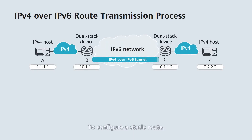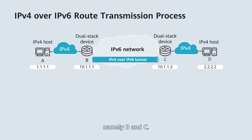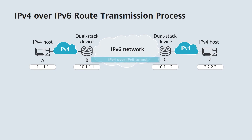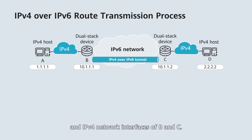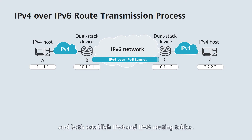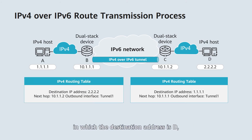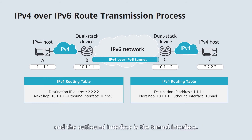To ensure packet forwarding, you can use static routes or dynamic routing protocols such as IGP and BGP to advertise routing information. To configure a static route, you need to specify a destination address and a next hop on both ends of the tunnel, namely B and C. The destination address should be the destination IPv4 address of the original packet, and the next hop should be the peer tunnel interface. To configure dynamic routes, you need to enable a dynamic routing protocol on the tunnel interfaces and IPv4 network interfaces of B and C. B and C then use dynamic routes to advertise routing information and both establish IPv4 and IPv6 routing tables. Taking OSPF as an example, the IPv4 routing table of B contains routing information in which the destination address is D and the next hop address is the tunnel interface address of C.